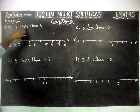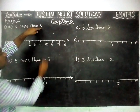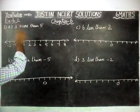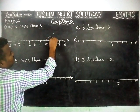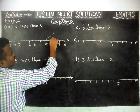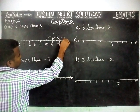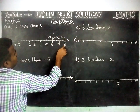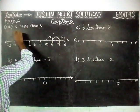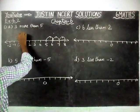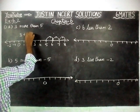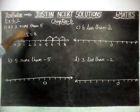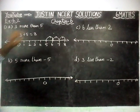For 3 more than 5, we start from 5. Since it is 3 more, we add 3 — moving right: 1, 2, 3. When we move right hand side we reach answer 8. So 3 more than 5 equals 3 plus 5, which is equal to 8.